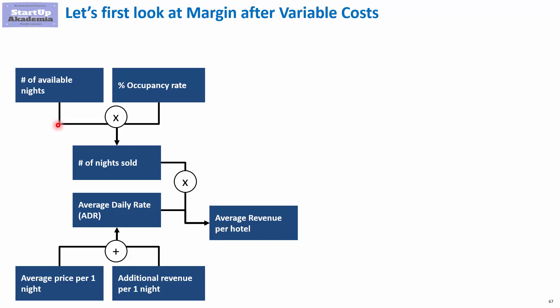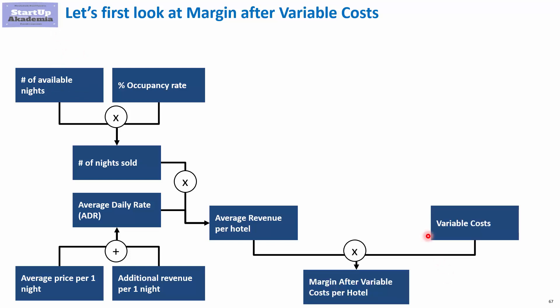When it comes to the nights sold, this depends on the occupancy rate — in other words, what percentage of the rooms available have guests inside — and also available nights, which in turn we can make dependent on the number of days the hotel is open and the number of rooms we have.